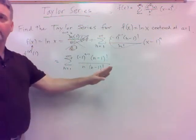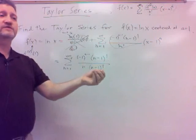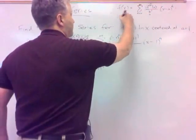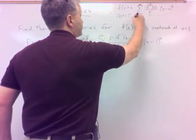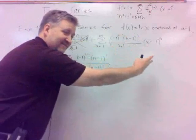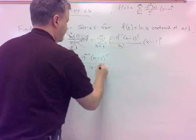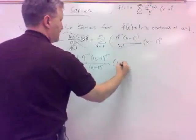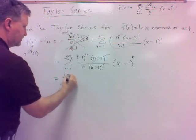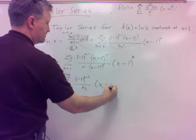Couldn't I write n factorial as n times n minus 1 factorial? Because that's what factorial does — it starts at n and then keeps subtracting 1. We did it kind of the other way previously where we had n plus 1 factorial — we wrote it as n plus 1 times n factorial. Well, here we need to go the other way because I've got n minus 1 factorial. So those cancel, and we wind up with: the sum from n equals 1 to infinity of negative 1 to the n minus 1 over n times x minus 1 to the n.